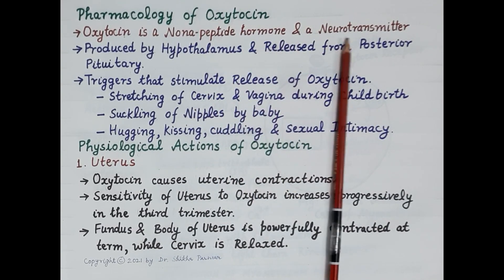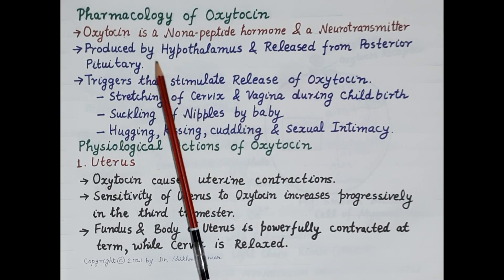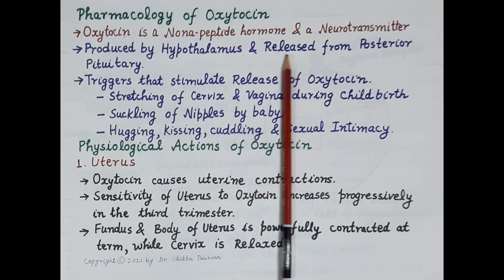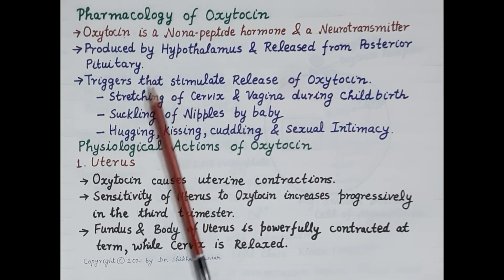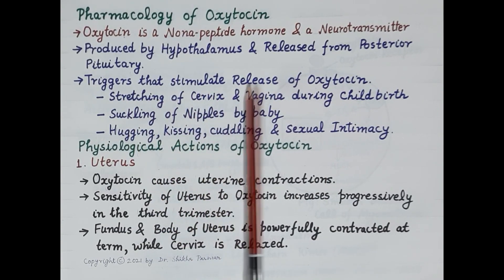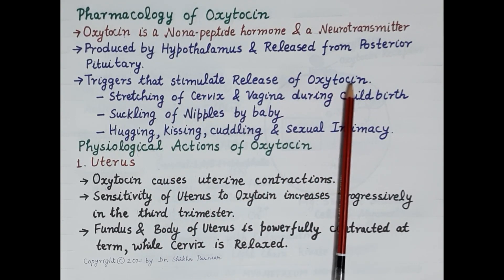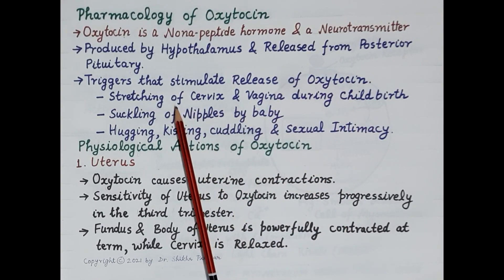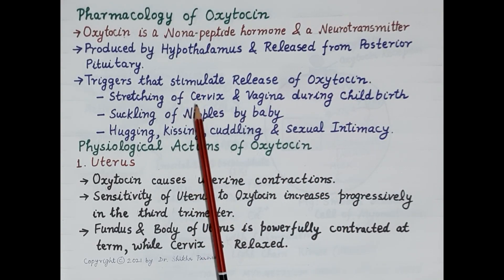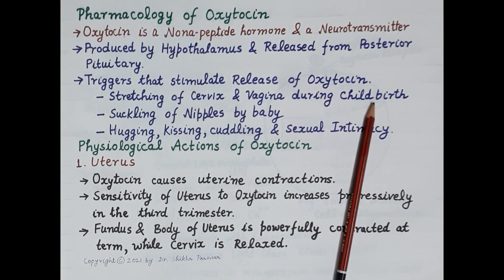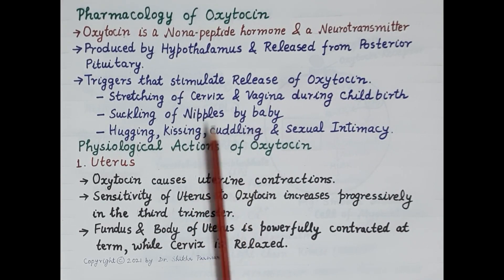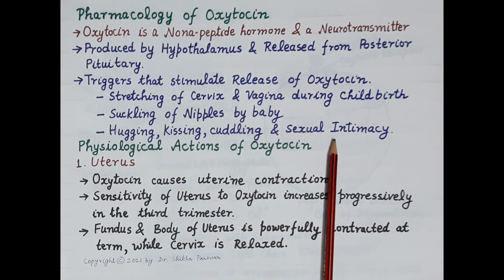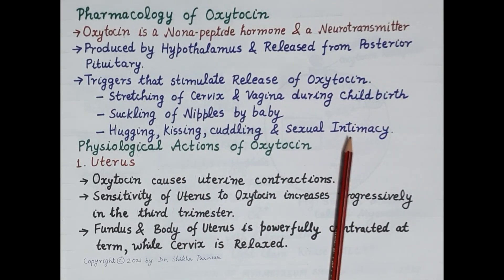Oxytocin is also a neurotransmitter. It is synthesized in the hypothalamus and released into the blood from the posterior pituitary gland. Triggers that stimulate its release include stretching of the cervix and vagina during childbirth, and suckling of the nipples by the baby.